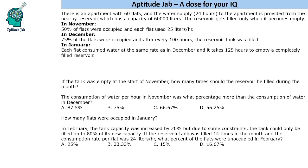Hello everyone, welcome to Aptitude Jab. This is a caselet. It says that there is an apartment with 60 flats and the water supply to the apartment is provided by a nearby reservoir which has a capacity of 60,000 liters. The reservoir gets filled only when it becomes empty, and for 3 months we are given data on how many flats were occupied and what the consumption rate was.